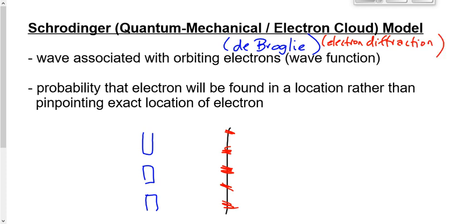Schrödinger, as he's devising the electron cloud model of the atom or the quantum mechanical model of the atom, took advantage of that knowledge that electrons behave as waves. He said that essentially the electrons as they orbit around the nucleus, that small dense positive nucleus.